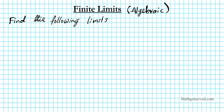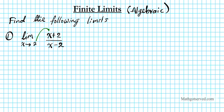Alright, question number one. We're going to find the limit as x approaches 2 of x plus 2 over x minus 2. So first thing we're going to do is just substitute and see if we can get a reasonable answer. If we run into trouble then we'll see if we can factor this. So we just substitute 2 into the x's — substitute 2 into this x and substitute 2 into that x.